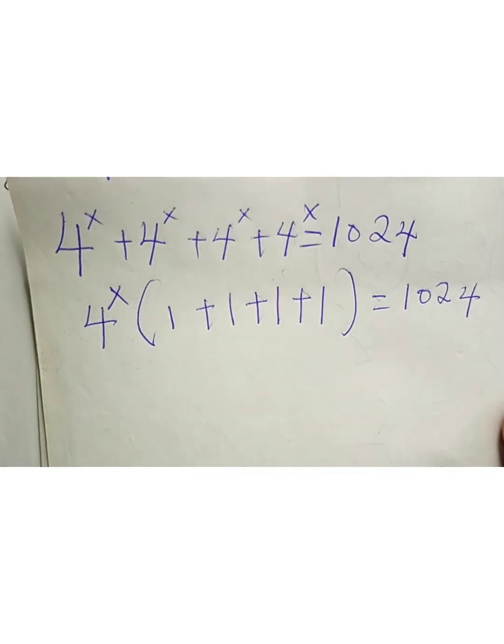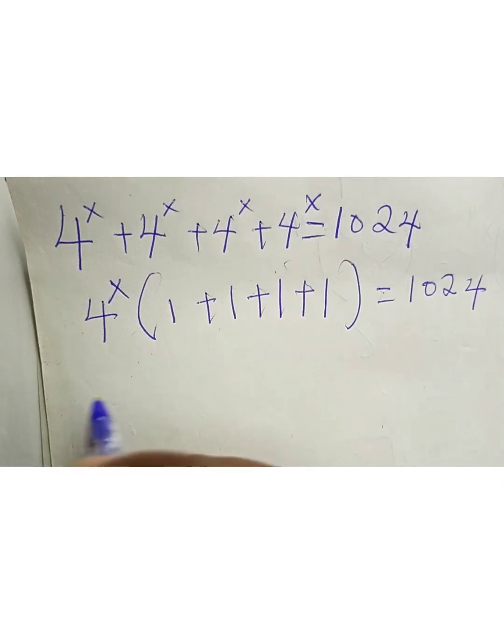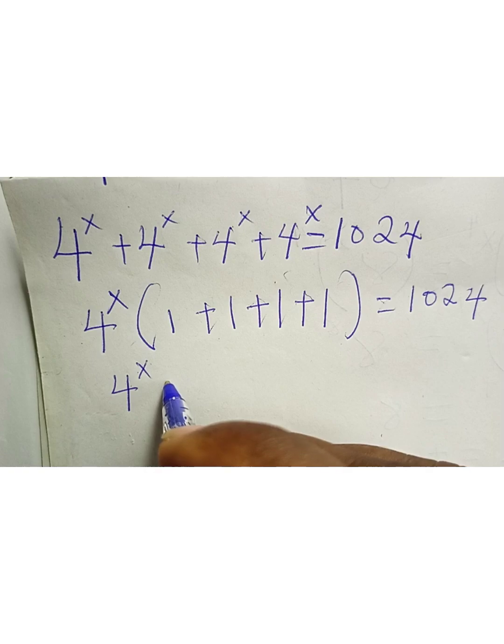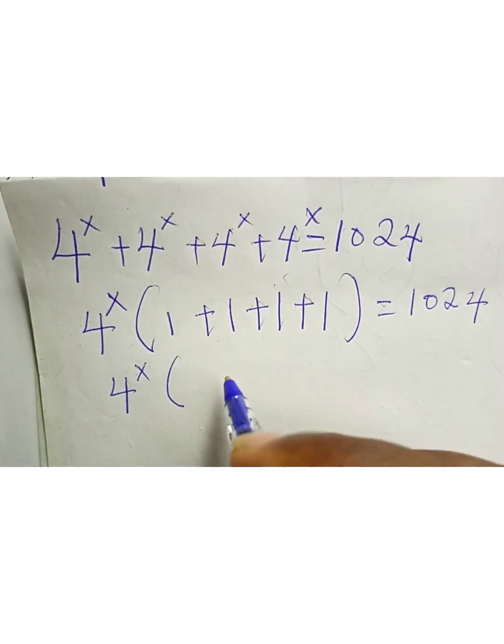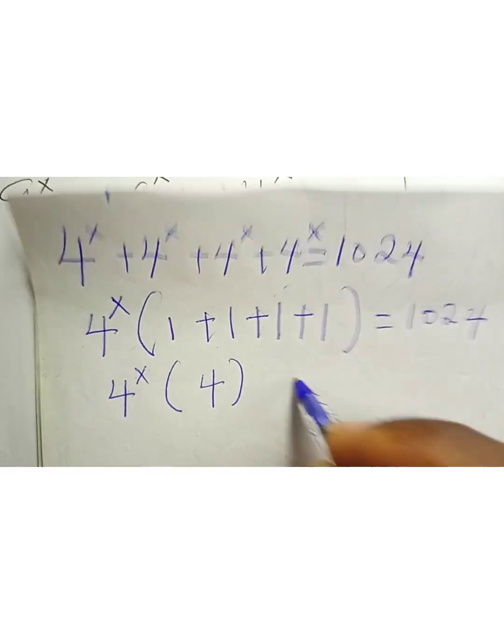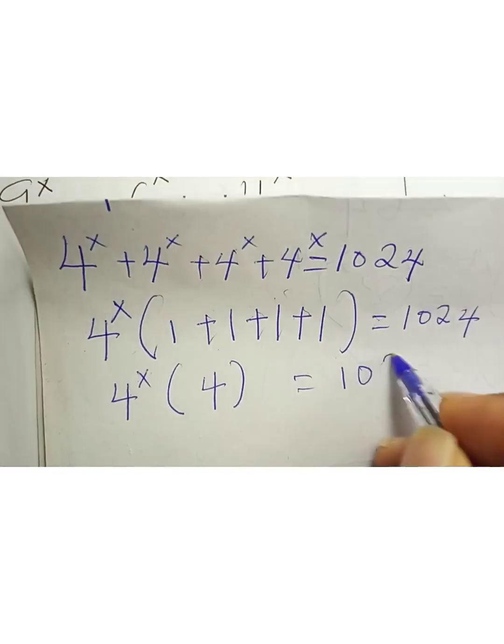That is what we have. So we're going to have 4^x multiplied by (1 + 1 + 1 + 1), which is 4^x times 4, equals 1024.